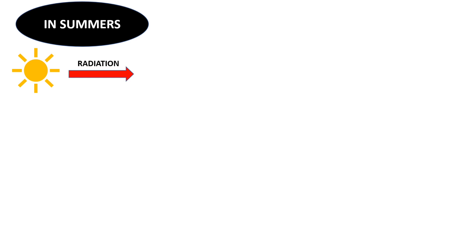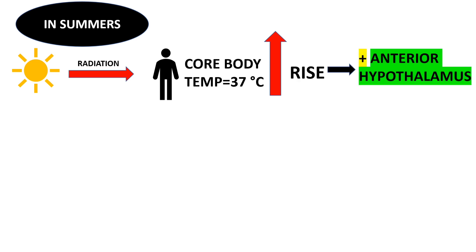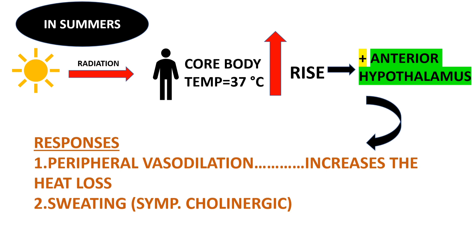In summers, the rise in body temperature stimulates the anterior hypothalamus. The activated anterior hypothalamus produces appropriate responses to return body temperature back to normal. These responses include: number one, peripheral vasodilation, which increases heat loss; and number two, activation of the sympathetic cholinergic system, causing sweating, which cools the body.